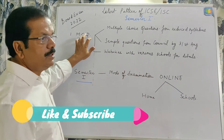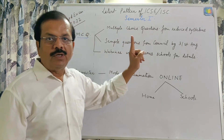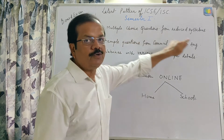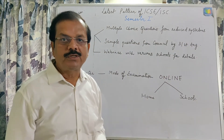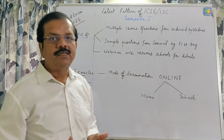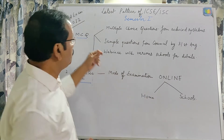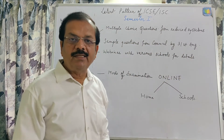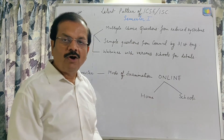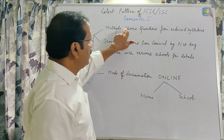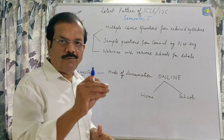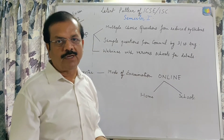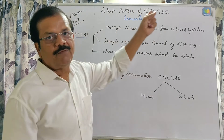Now, multiple choice question — MCQ. MCQ means multiple choice questions from the reduced syllabus. Whatever syllabus is reduced, from that you will select the questions, and those should be in the nature of multiple choice. Multiple choice doesn't mean that the nature of the question will be objective type. It means the questions will have four options. Out of four options you can select one option, two options, or more, because the choice can be more than one.